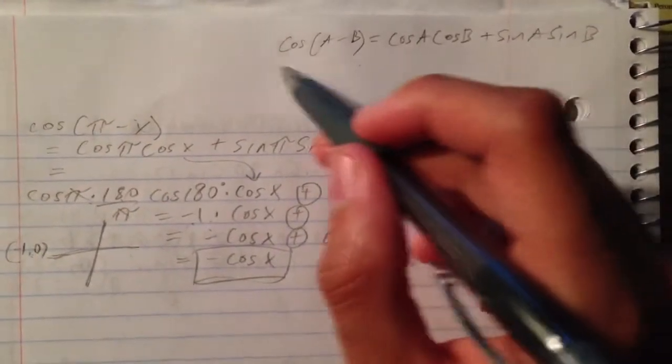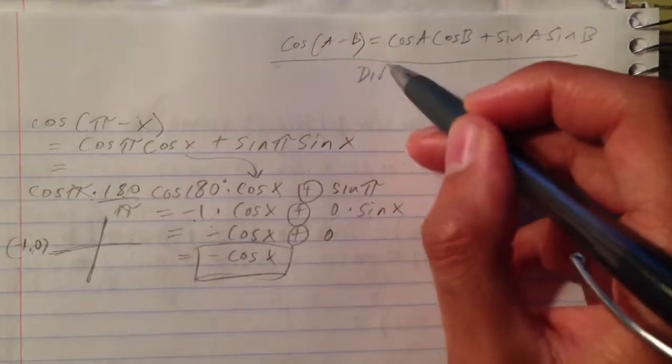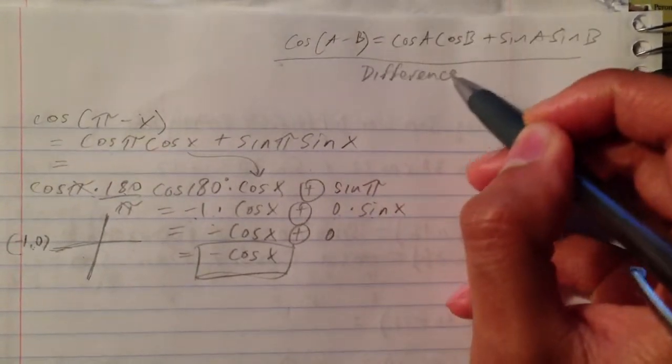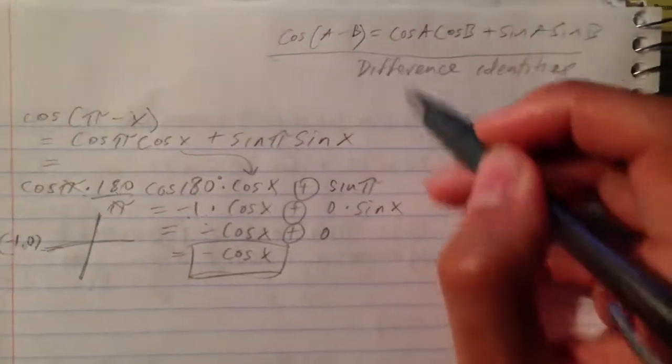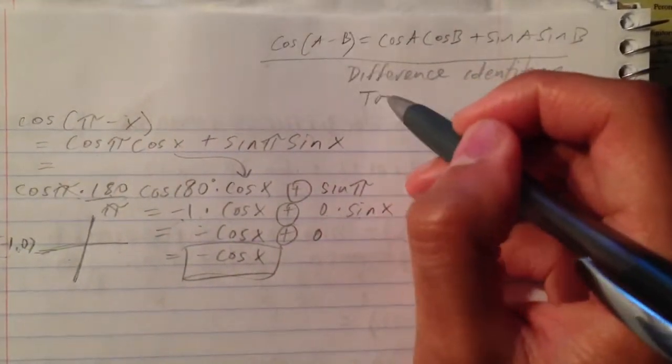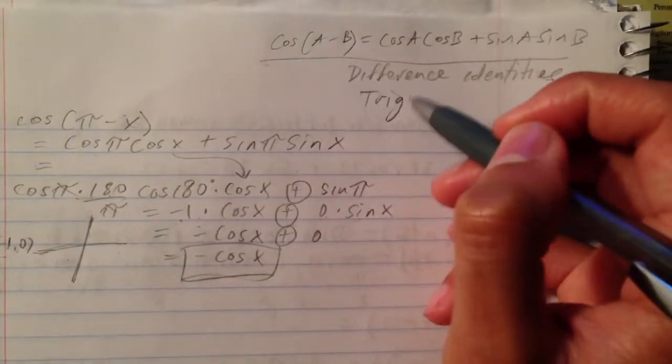Because we use this important formula here. This is one of the difference identities for your trigonometry.